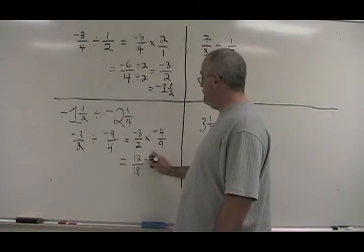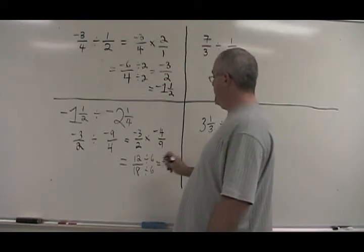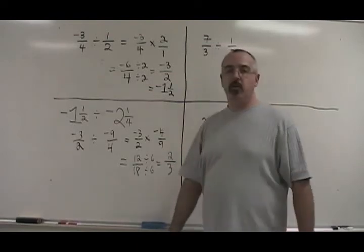12 and 18 have a common factor of 6. 12 divided by 6 is 2. 18 divided by 6 is 3. Our answer is 2 thirds.